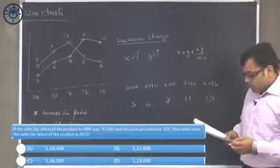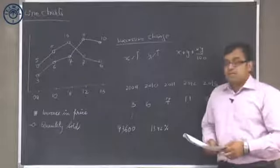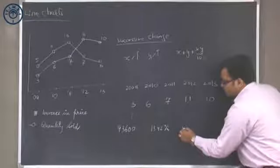From 2009 to 2011, as far as the quantity is concerned, the quantity has increased by 6 percent and 7 percent, so that will become 7 plus 6, 13 plus 0.42, so this will become 13.42 percent. At the same time, if I look at the price, the price has increased between 2009 and 2011 by 8 percent and 10 percent, so that will become 18 plus 0.8, 18.8 percent increase.